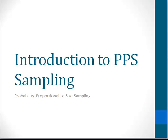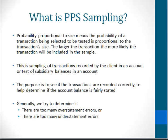This is an introduction to probability proportional to size sampling. What is PPS sampling? Probability proportional to size means the probability of a transaction being selected for testing is proportional to the transaction's size. The larger the transaction, the more likely it will be included in the sample. This is the kind of sampling used to test transactions of a client that are included in a balance, or to test subsidiary balances included in a client's balance. The purpose of the test is to see if the transactions are recorded correctly and to help determine if the account balance is fairly stated.